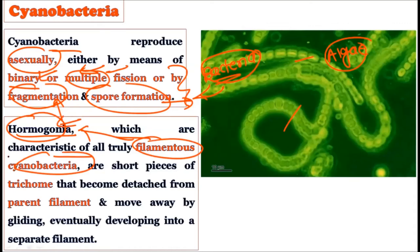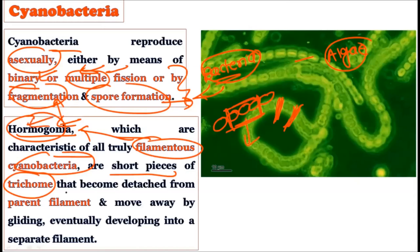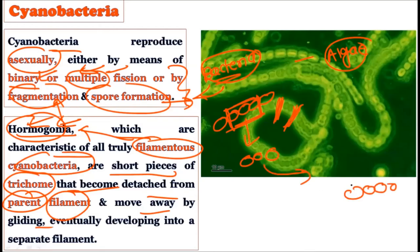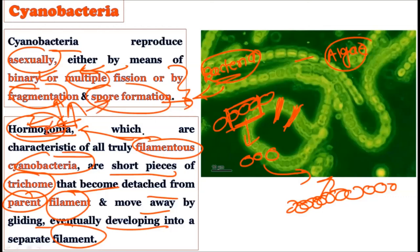Hormogonia are short pieces of trichomes that become detached from the parent filament, move away by gliding, and develop into separate new filaments. So cyanobacteria can reproduce by binary fission, multiple fission, fragmentation, or through hormogonia. This is how cyanobacteria reproduce, and this concludes our study of cyanobacteria.